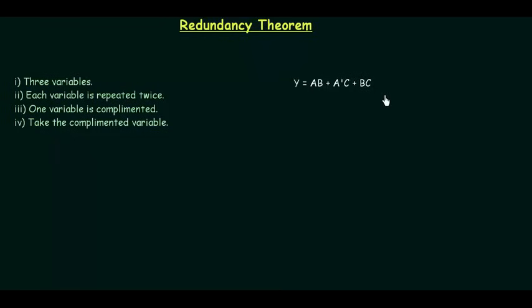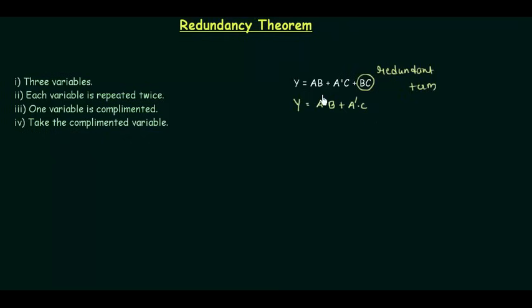In the last presentation I gave you this problem as homework and now we will solve it. The function y is equal to a·b or a-complement·c. I have just eliminated the last term b·c because this is a redundant term. We can solve this by using the redundancy theorem, which is also called the consensus theorem, and it is very important in solving Boolean algebra.